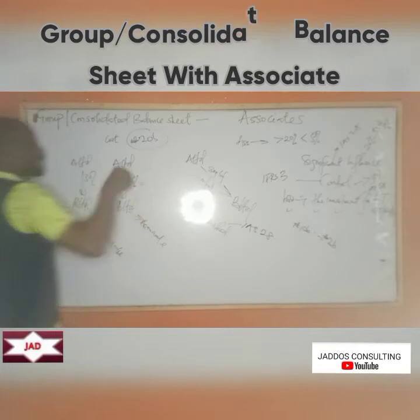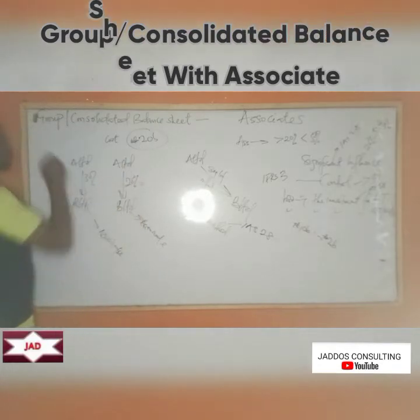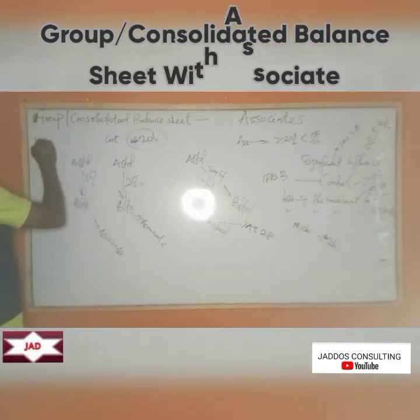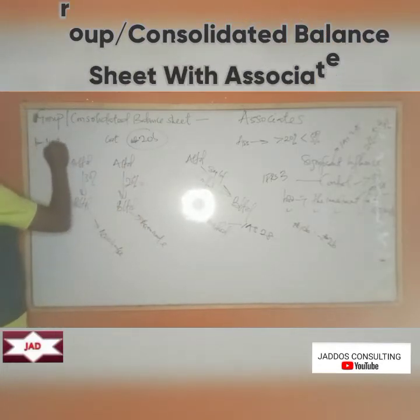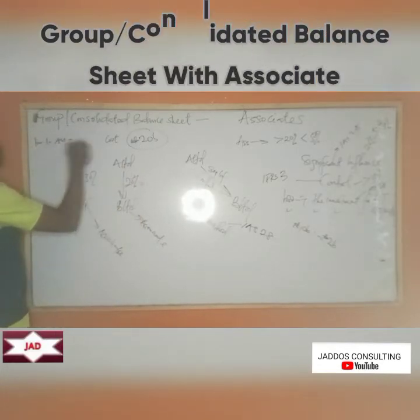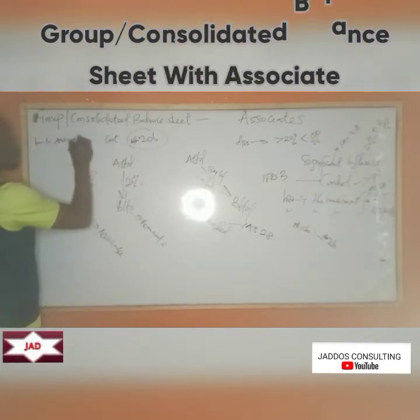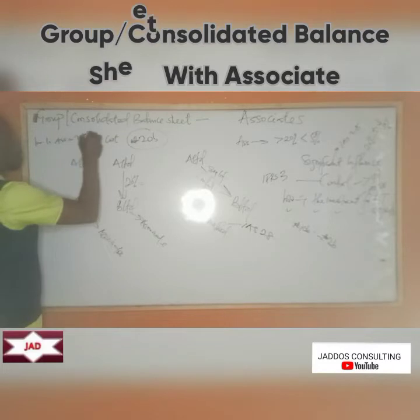Under the equity method, at acquisition you hold the investment at cost. Then after acquisition, any undistributed profit — any profit made that is not distributed — forms part of the cost of the investment. For example, if the cost of investment in the associate is 20 billion naira and after acquisition the associate makes a profit of 10 billion naira, we increase the cost by the investor's share of undistributed profit. If the shareholding is 30%, that is 30% of 10 billion = 3 billion naira, increasing the investment.